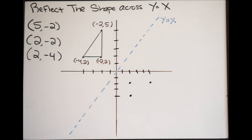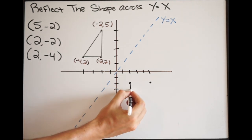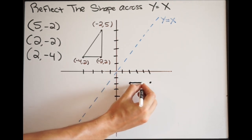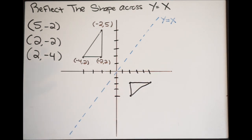We are doing this by hand, so it doesn't have to be perfect, but just draw in your new shape. Here is the shape now being reflected across the line y equals x. And that is it.